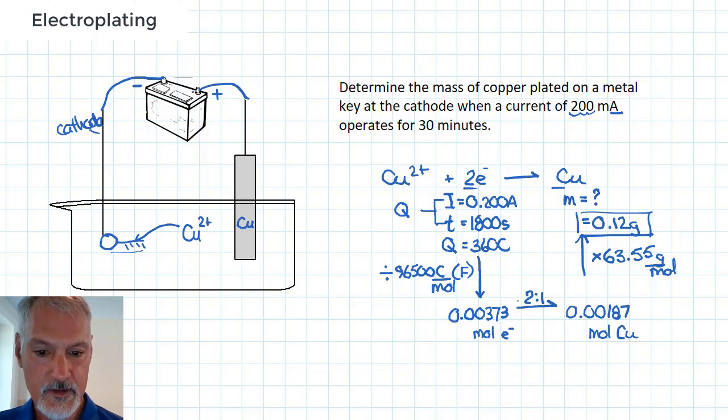So the second half is somewhat familiar. What's new is what we're doing here. So there's two relationships that we'll employ. One is to determine the quantity of charge as the product of I times T. And then to convert quantity of charge into moles, we divide by Faraday's constant. So these two relationships are employed over here to convert our information about electrons into moles.